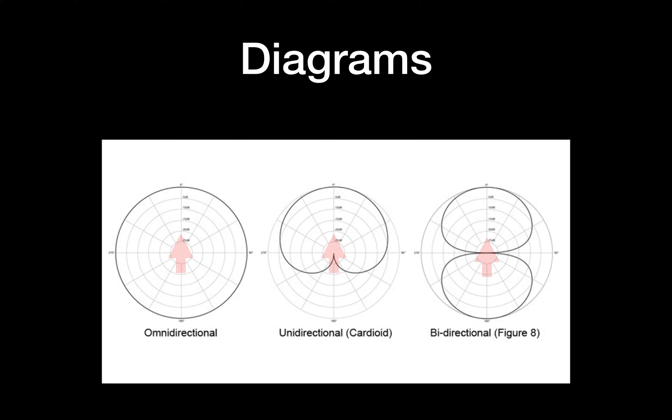So here are the diagrams. I've talked about cardioid, omnidirectional, and figure eight, and they're mostly displayed in diagrams like this. I've added a pink arrow in the center to show you the direction of the microphone. And what these diagrams show you is a 360 degree circle of all of the direction that the sound could be coming into that microphone.